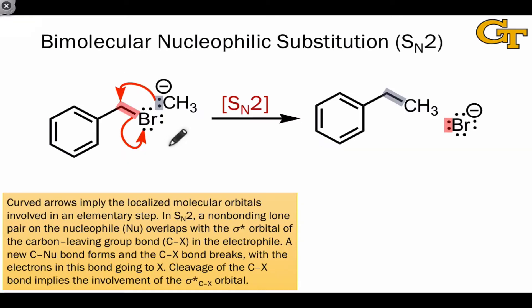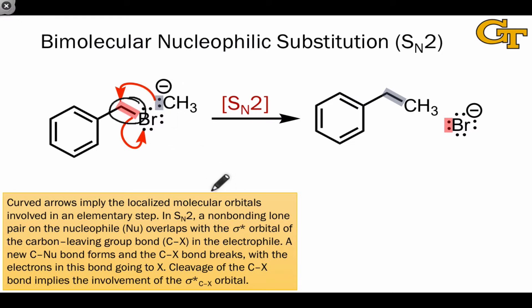Bimolecular Nucleophilic Substitution, or the SN2 elementary step, involves the donation of a pair of electrons in the nucleophile to a sigma-star electron acceptor in the electrophile. It is an n-to-sigma-star orbital interaction and n-to-sigma-star electron flow.